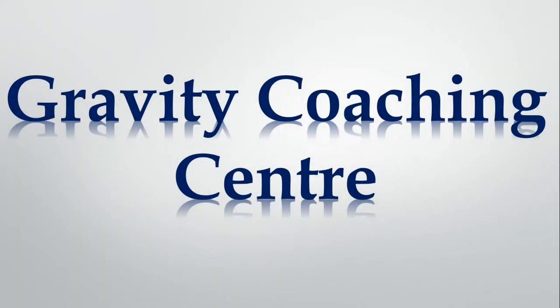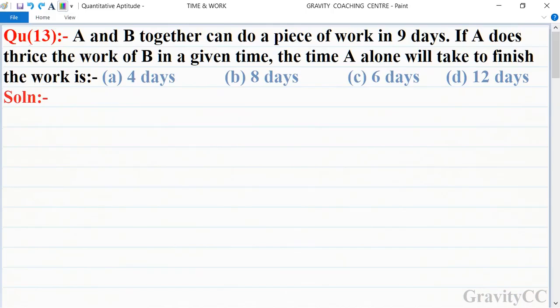Welcome to our channel Gravity Coaching Center, chapter time and work, question number 13. A and B together can do a piece of work in nine days. If A does thrice the work of B in a given time, the time A alone will take to finish the work is...